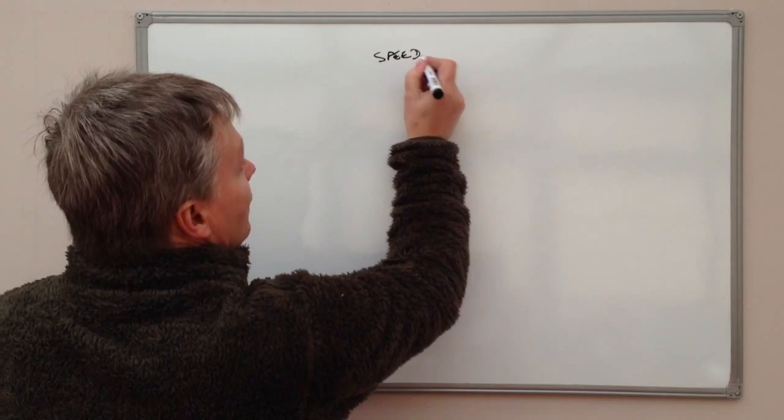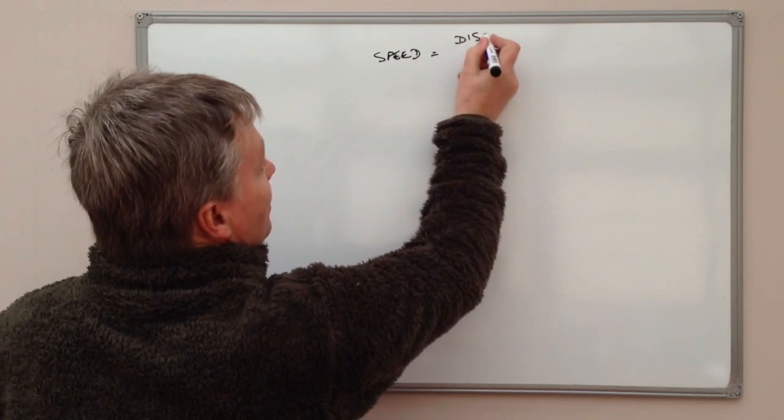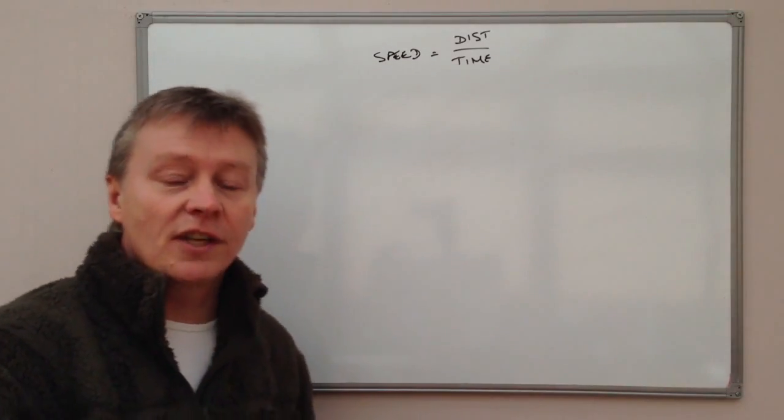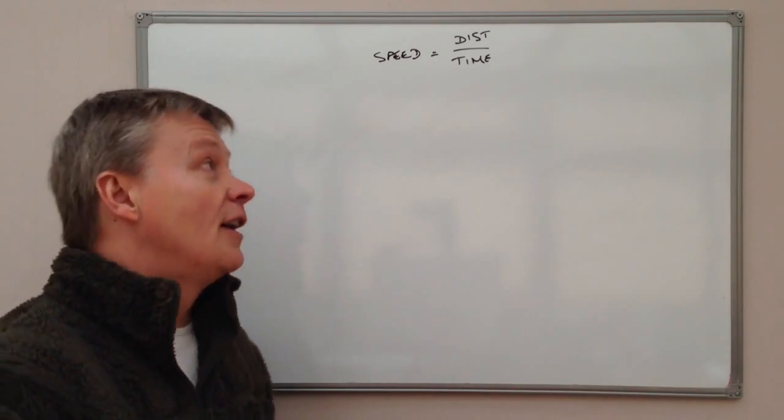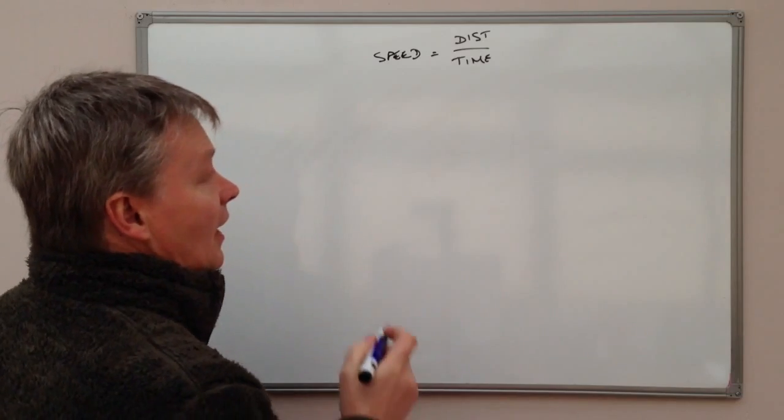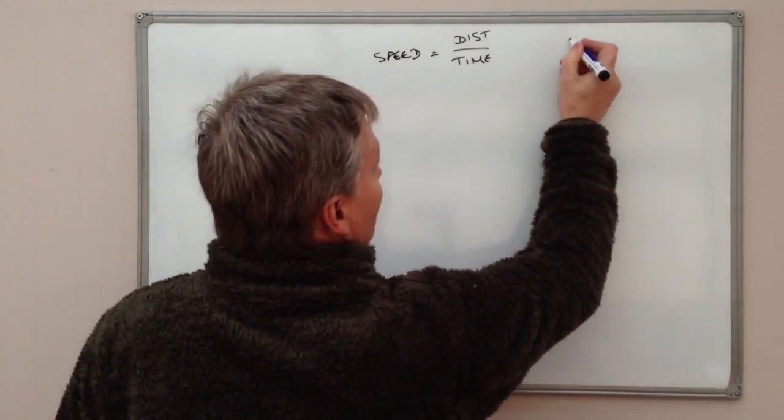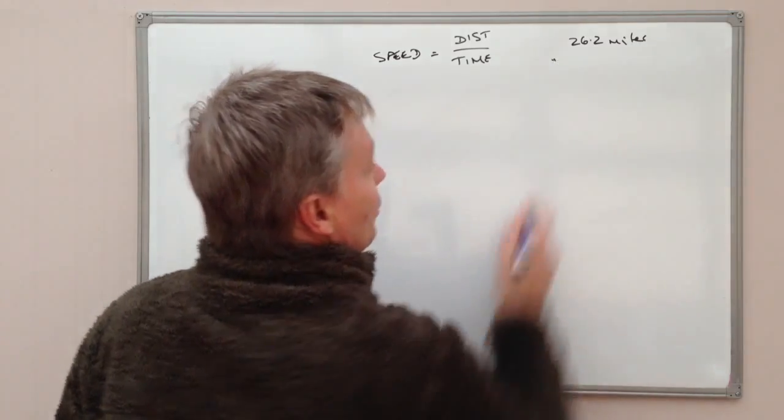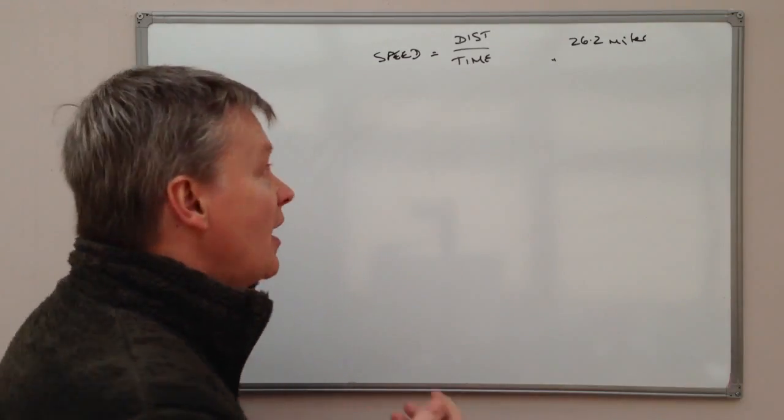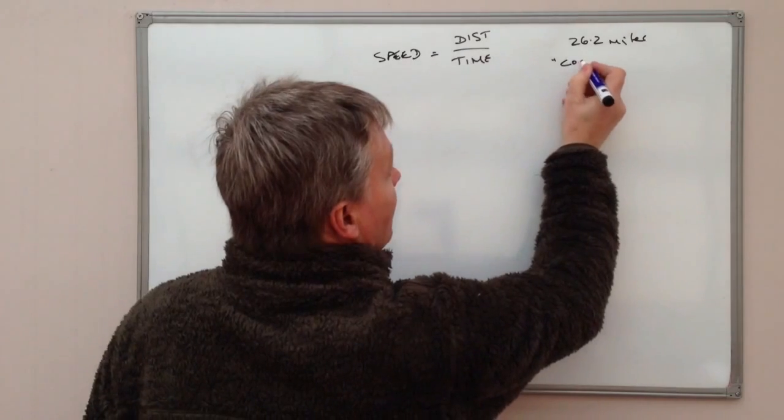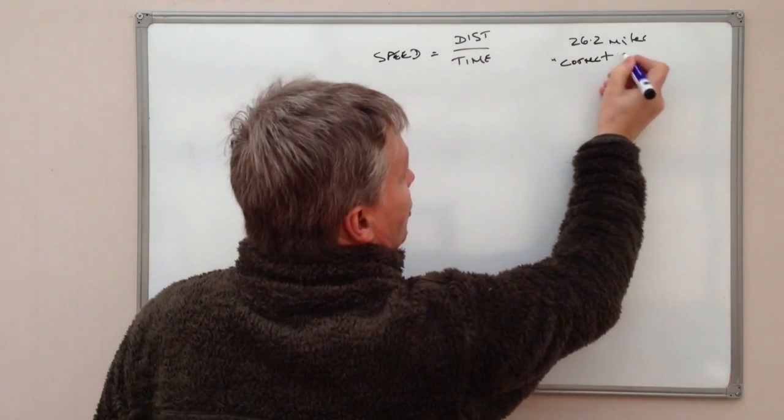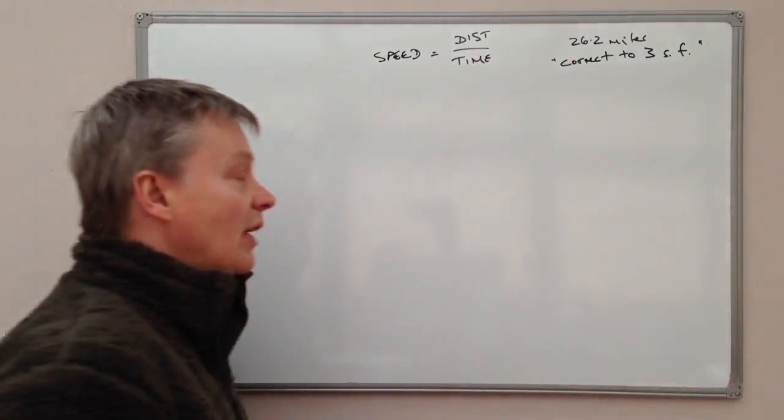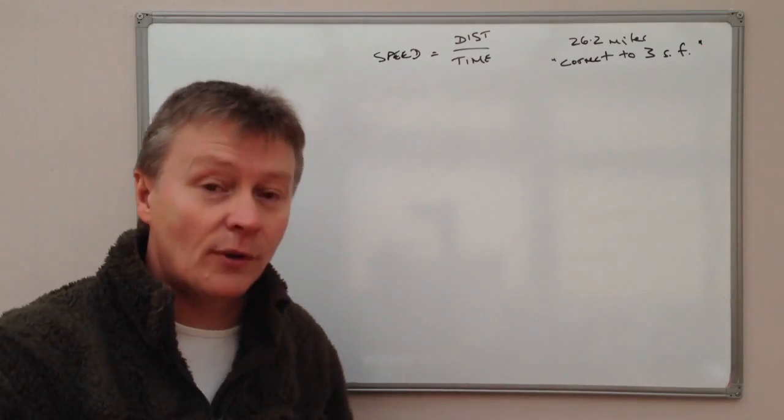So let's put the formula over here. We've got speed equals distance divided by time. And this particular question deals with a lady called Sarah who's running a marathon. And the distance that she covers is 26.2 miles. And the important thing is in the question, it says correct to three significant figures.